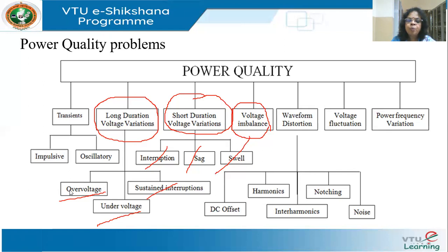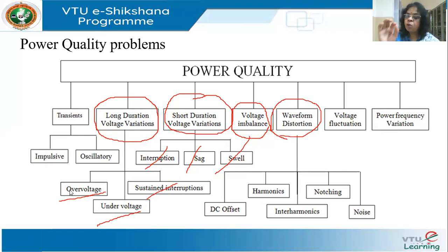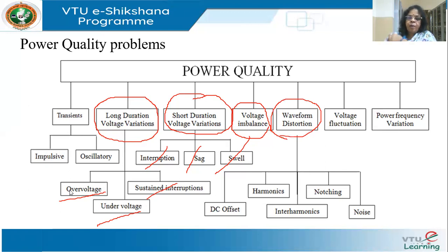Then, waveform distortion. We want a pure sinusoidal voltage, so if there is any distortion in the waveform, we call it waveform distortion — meaning it is not sinusoidal. The types include DC offset, harmonics, interharmonics, notching, and noise.